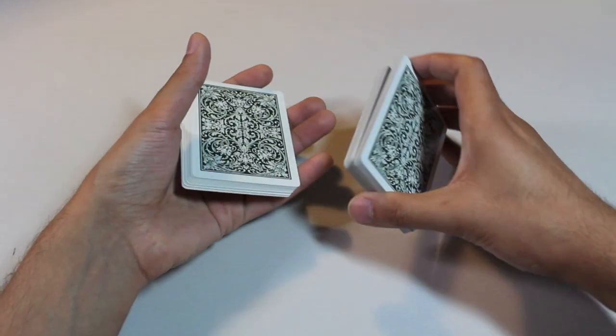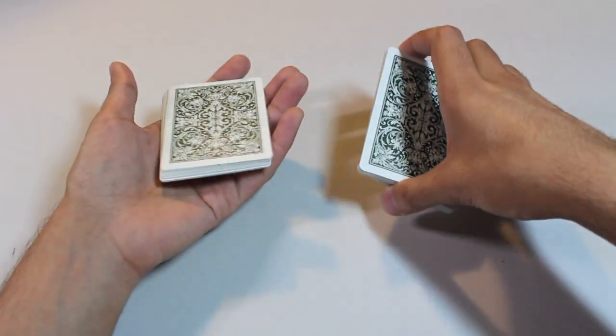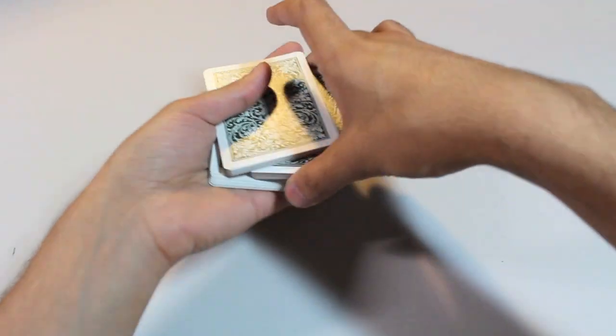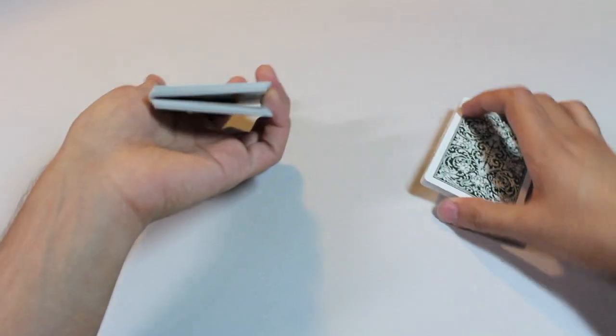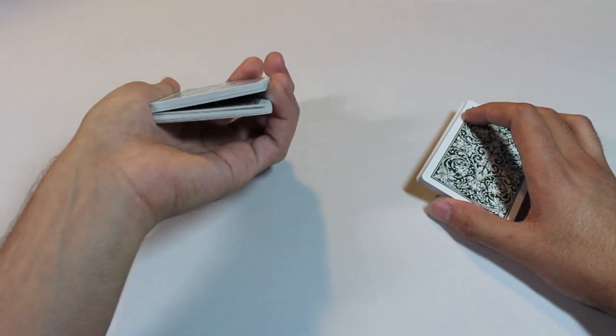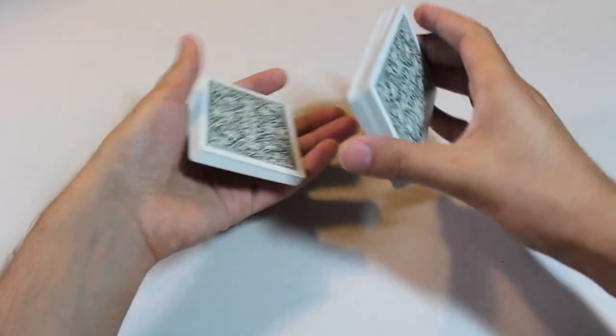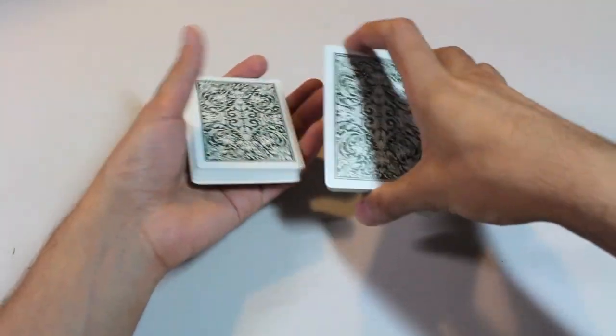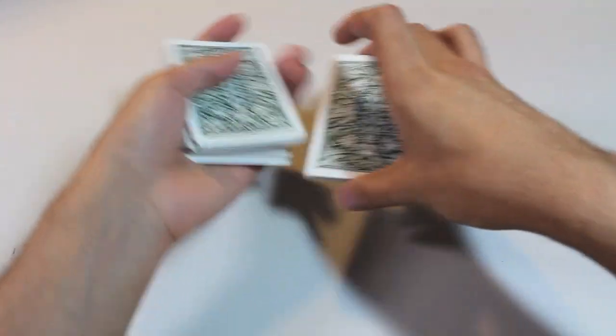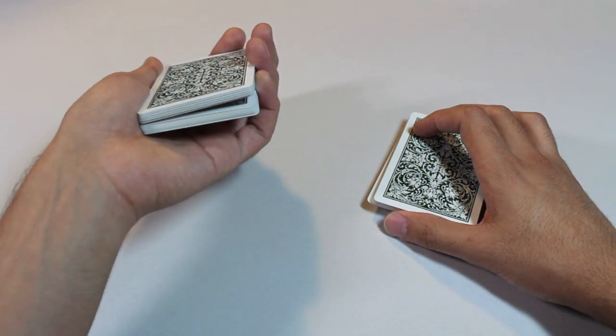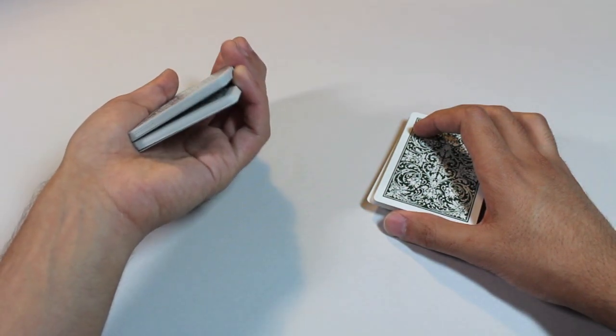Next step is to cut another third right on top of the left hand cards. But this time you need to keep a pinky break in between those two packets. So this is probably the hardest part of the cut. You want to be able to cut this next packet on top of this packet without any hesitation. So you need to be very comfortable at creating that pinky break.